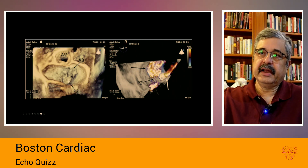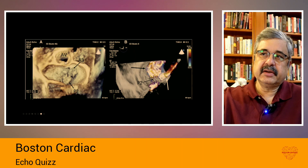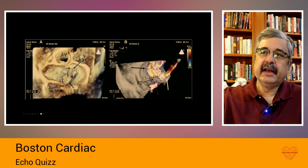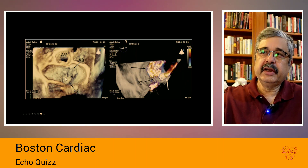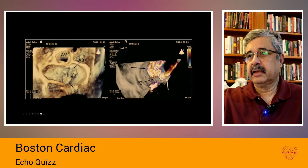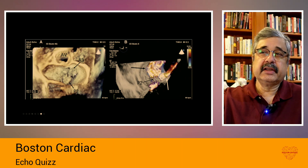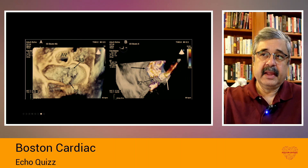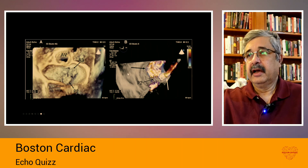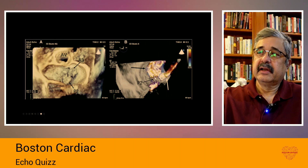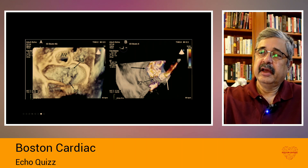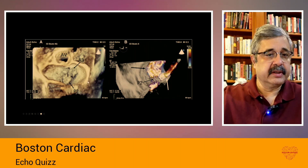For example, in this specific case, there is a P2 flail leading to a jet going anteriorly, and an A3 flail with a jet headed in the opposite direction. If you were looking at an axial plane going through A2, you would not be capturing the jet at the posteromedial commissure. A three-dimensional echocardiography in this specific plane demonstrates one jet going anteriorly from P2, and one jet coming off A3 headed posteriorly.